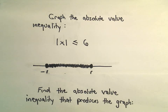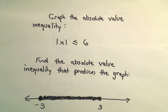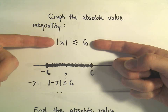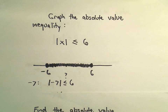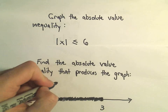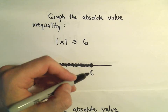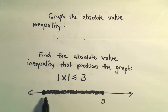Let's use this idea. Suppose we want to make an absolute value inequality that produces a graph with numbers trapped between negative 3 and positive 3 inclusive. The inequality absolute value of x less than or equal to 6 gave us all numbers trapped between negative 6 and 6 inclusive. So to produce an equivalent graph for negative 3 to 3, we should use the absolute value of x less than or equal to 3. That's the absolute value inequality that describes this shaded interval.